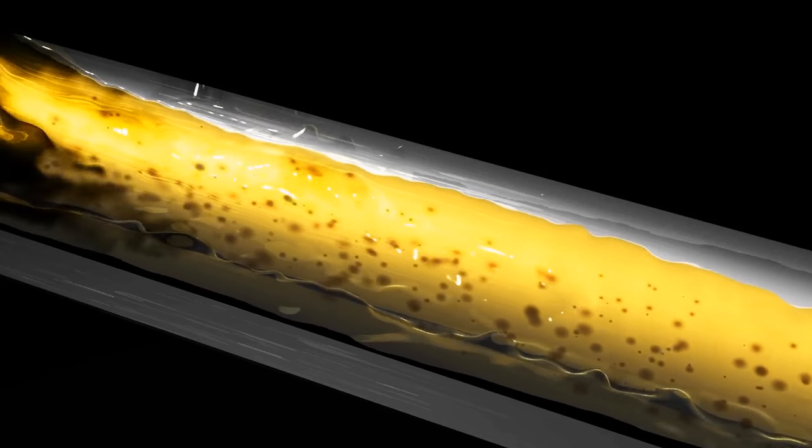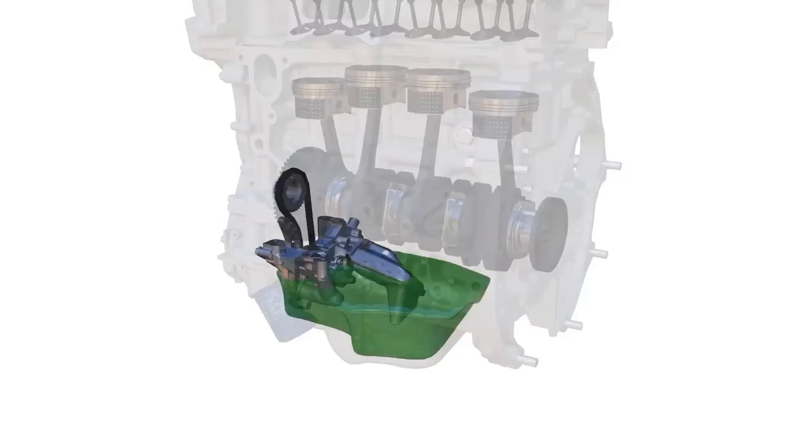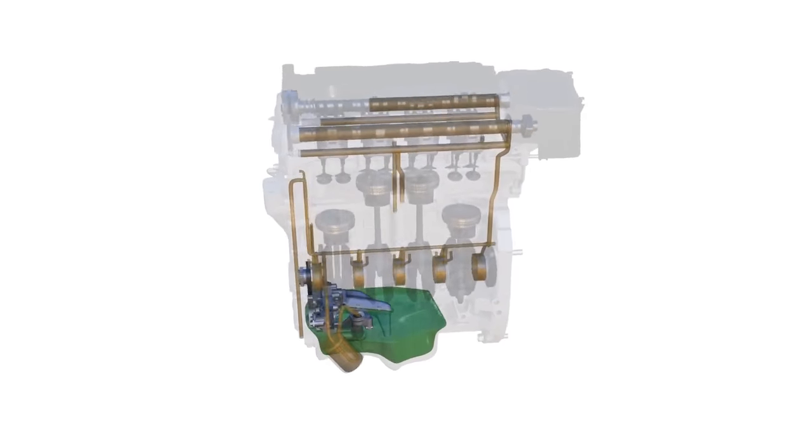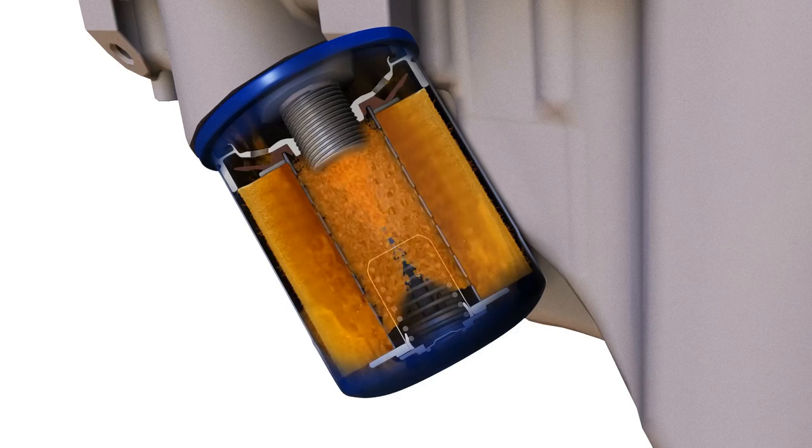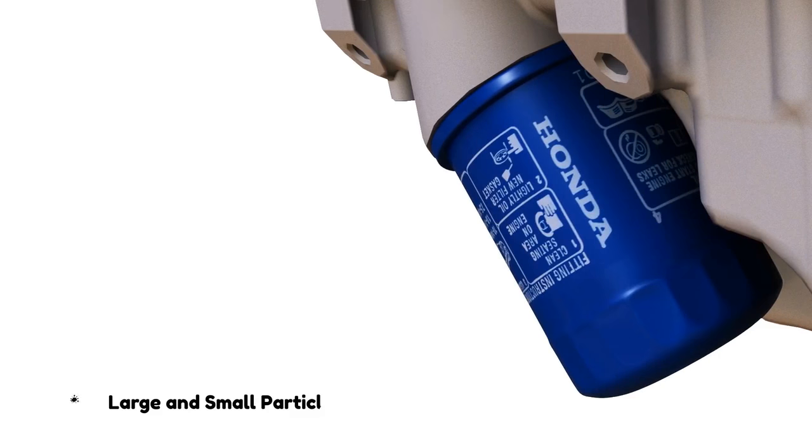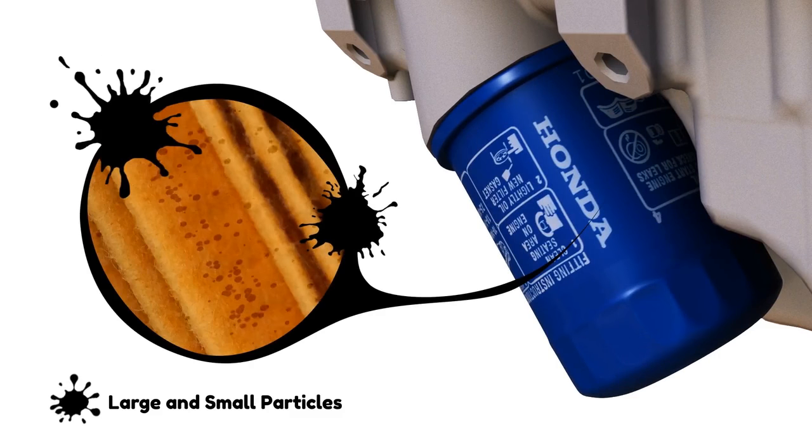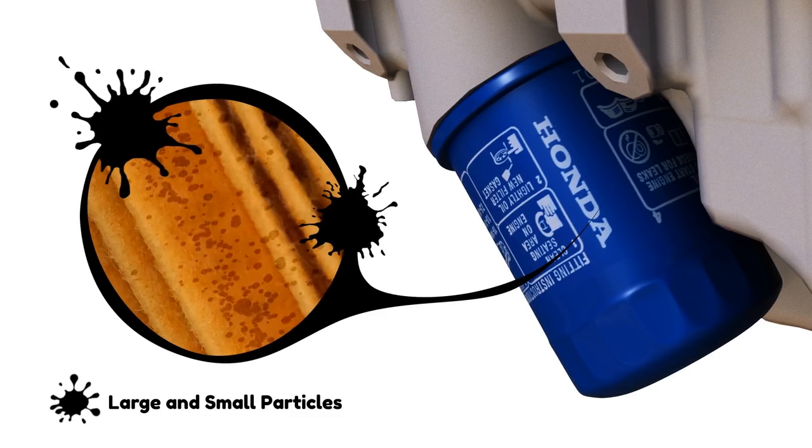Particles get trapped in the oil as the oil passes through the engine. These particles are primarily particles from mechanical wear. As the oil flows through the oil filter, large and small particles are caught in the filter material and removed from the oil.